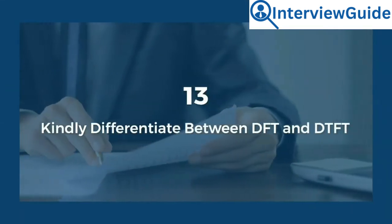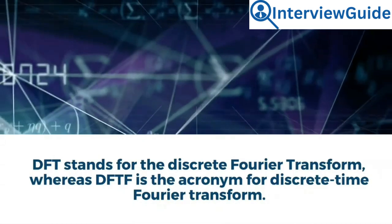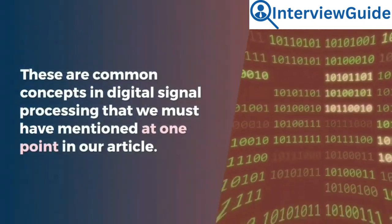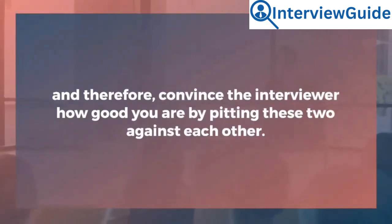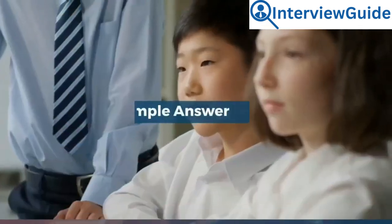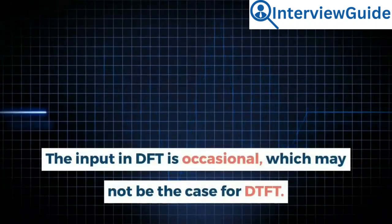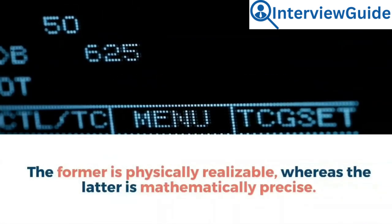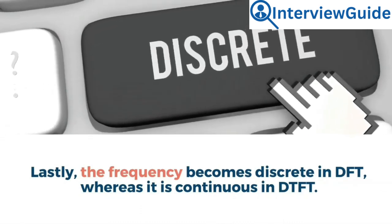Question 13: Kindly differentiate between DFT and DTFT. DFT stands for discrete Fourier transform, whereas DTFT is the acronym for discrete-time Fourier transform. Sample answer: DFT has a limited number of samples of periodic signals, whereas DTFT has an unlimited number of samples. The input in DFT is discrete, which may not be the case for DTFT. The former is physically realizable, whereas the latter is mathematically precise. Lastly, the frequency becomes discrete in DFT, whereas it is continuous in DTFT.